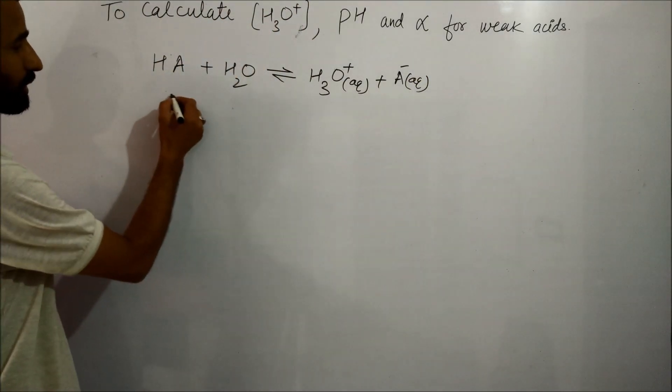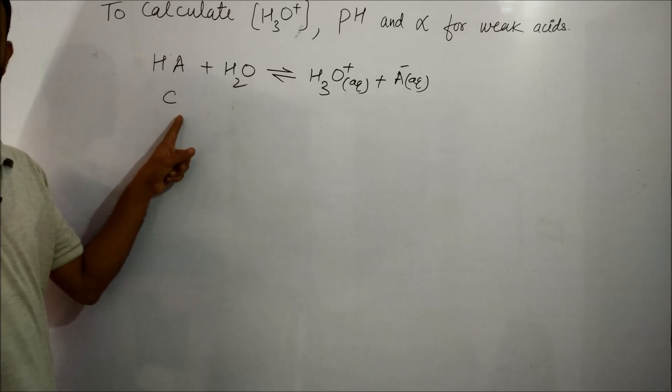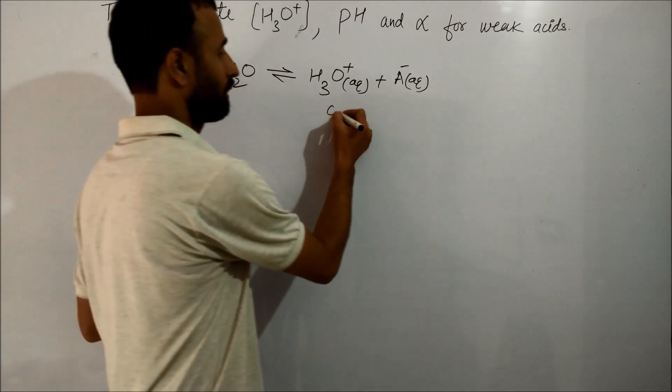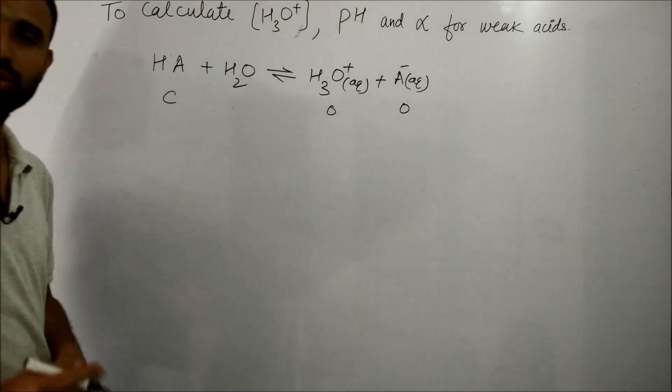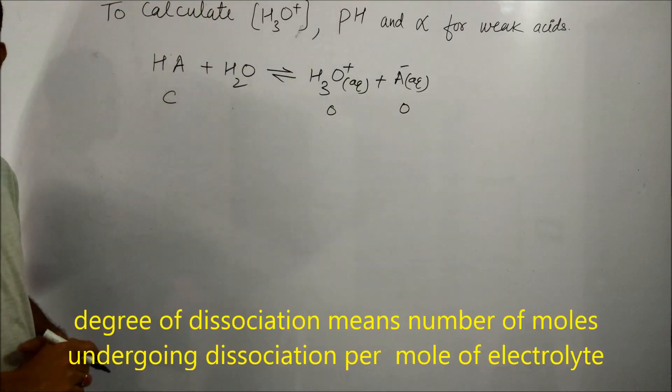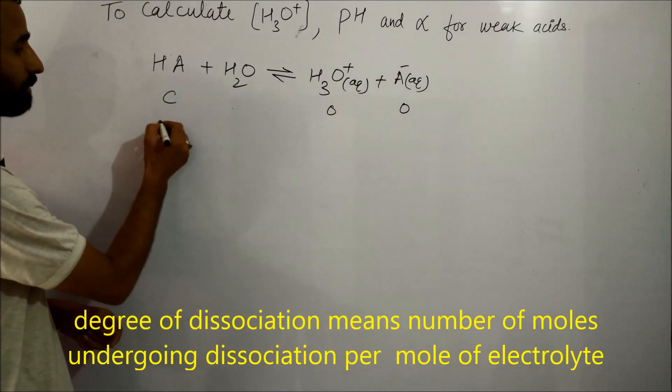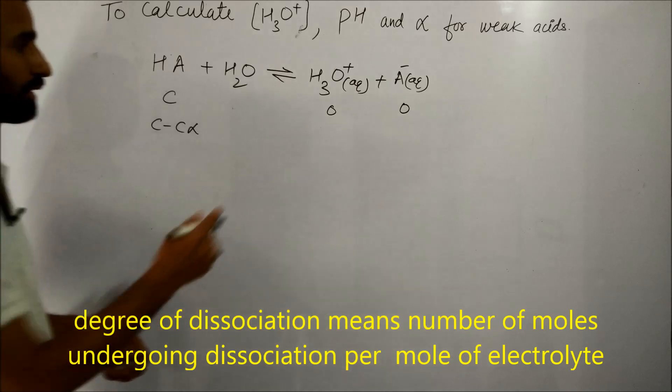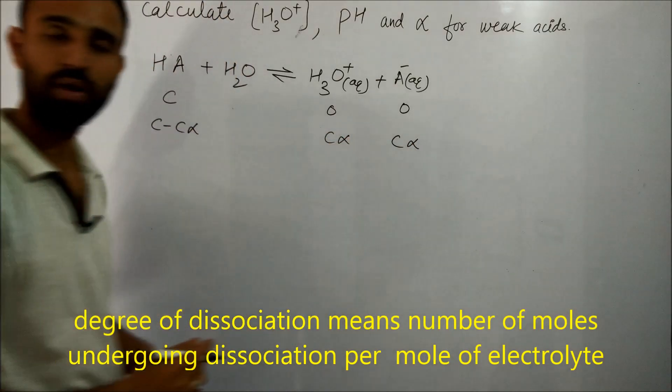If C is the concentration of HA, initially we have C, 0, 0. If alpha is the degree of dissociation, then at equilibrium it becomes C minus Cα, Cα, Cα.